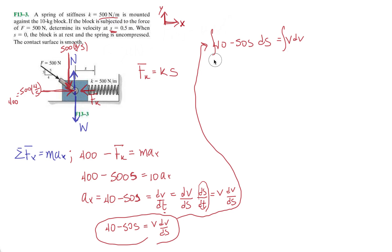So we have 40 minus 50S times dS equals V dV. And then I'm going to go from 0 to 0.5, and my velocity, they say they're telling me when the block is at rest when the spring is uncompressed. So when the spring is uncompressed, S is 0, velocity is 0. And then we're trying to look for the final velocity. So when we do this, we end up getting 40S minus 50S squared divided by 2, evaluated from 0 to 0.5. And then V squared over 2 from 0 to VF.